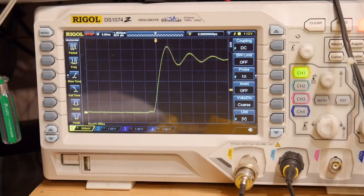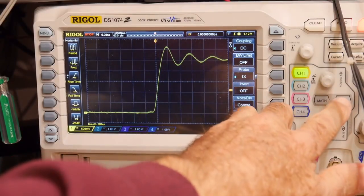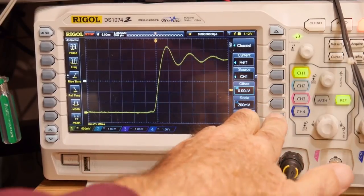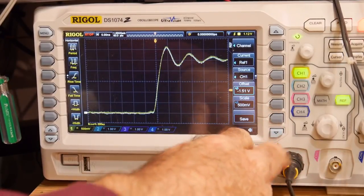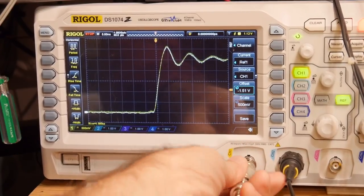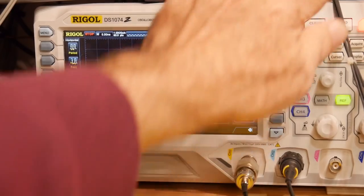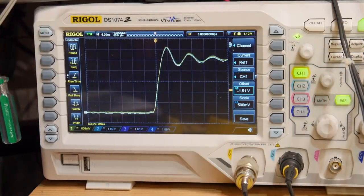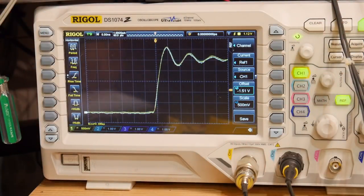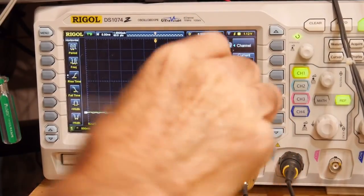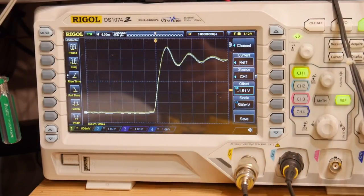Let's see here. If we do reference. Reference 1. Save. There we go. So if we remove the signal, we still have reference 1 showing. Oh, I don't have it running. Let's see here. Run. Ah! There we go. So we are running. And that will stay up there.